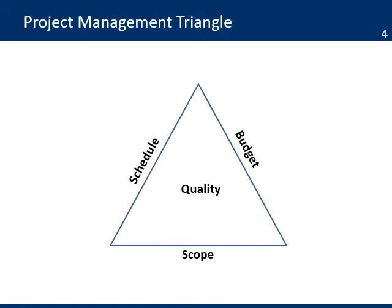All these constraints are usually known as the project management triangle. It is described as a triangle in which each side represents one of the constraints: schedule, budget, and scope — and in the middle is quality. When schedule, budget, and scope are in balance, you have quality in the project. But whenever there are changes in any one of these sides, there is going to be an impact on the other two sides, and the project will not meet the quality standards.